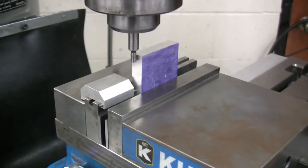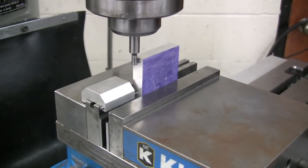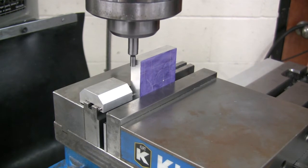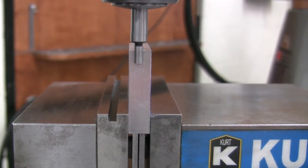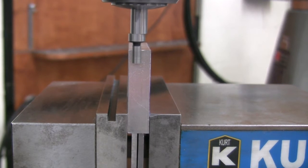The tip of the edge finder will initially oscillate. As the edge finder begins to touch the part, the oscillation will decrease until the edge finder is centered. When the edge finder reaches the edge of the part, it will kick out to the side.